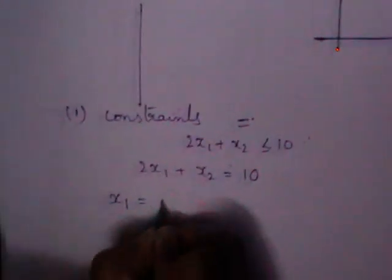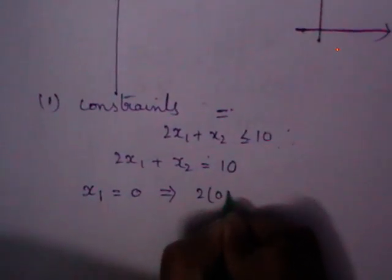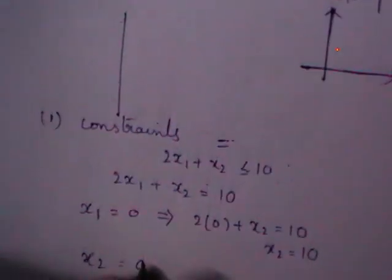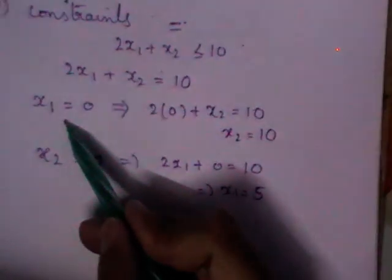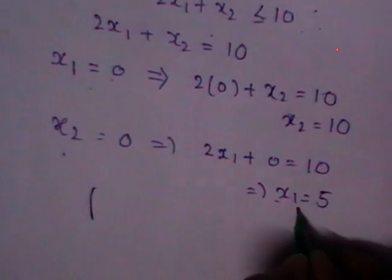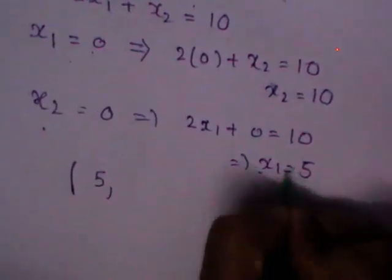For example, if a constraint is given as less than or equal to type, consider it as an equation. Put x1 equal to 0 — then 2 times 0 plus x2 equals 10, so x2 is 10. Then put x2 equal to 0 — you get 2x1 equals 10, which gives x1 equals 5. This gives you an ordered pair. By taking a suitable scale, try to plot this constraint as a line.